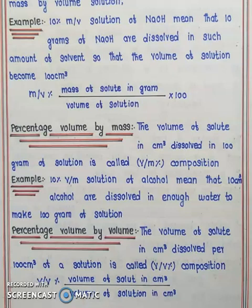Percentage by mass by volume: it is the number of grams of solute dissolved per 100 cubic centimeters of solution, called percentage mass by volume. For example, 10% m/v solution of sodium chloride means that 10 grams of NaOH are dissolved in such amount of solvent so that the volume of solution becomes 100 cubic centimeters. The formula is: m/v percentage = mass of solute in grams divided by volume of solution, multiplied by 100.